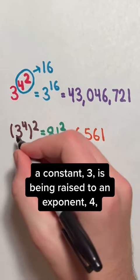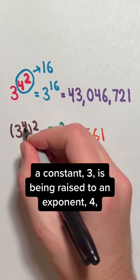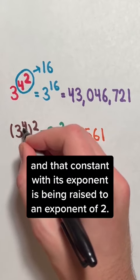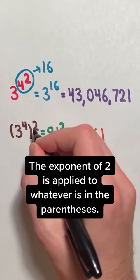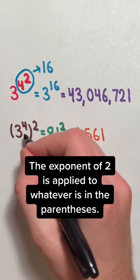In this situation, a constant, 3, is being raised to an exponent of 4, and then that constant with its exponent is being raised to an exponent of 2. The exponent of 2 is applied to whatever is in the parentheses.